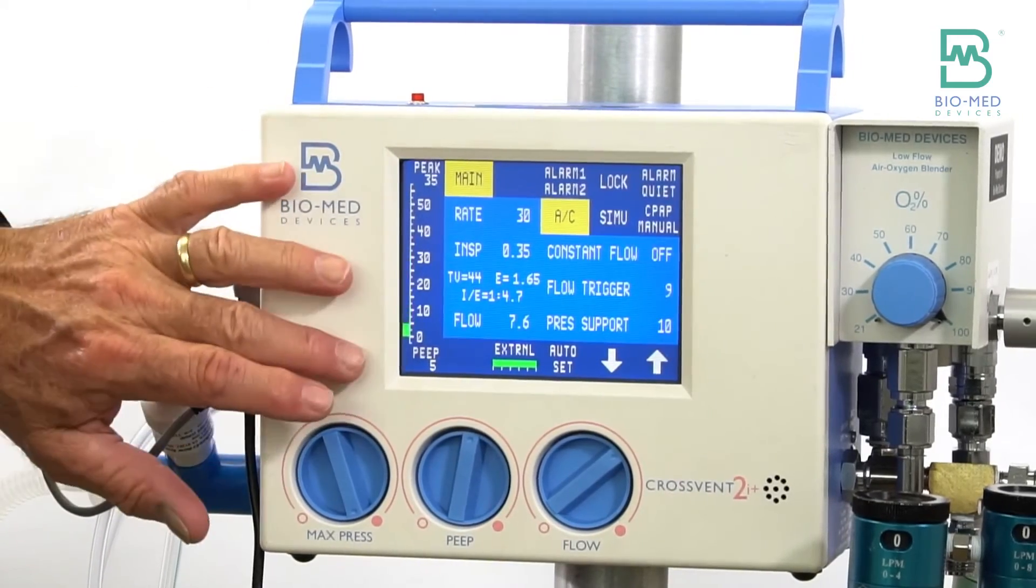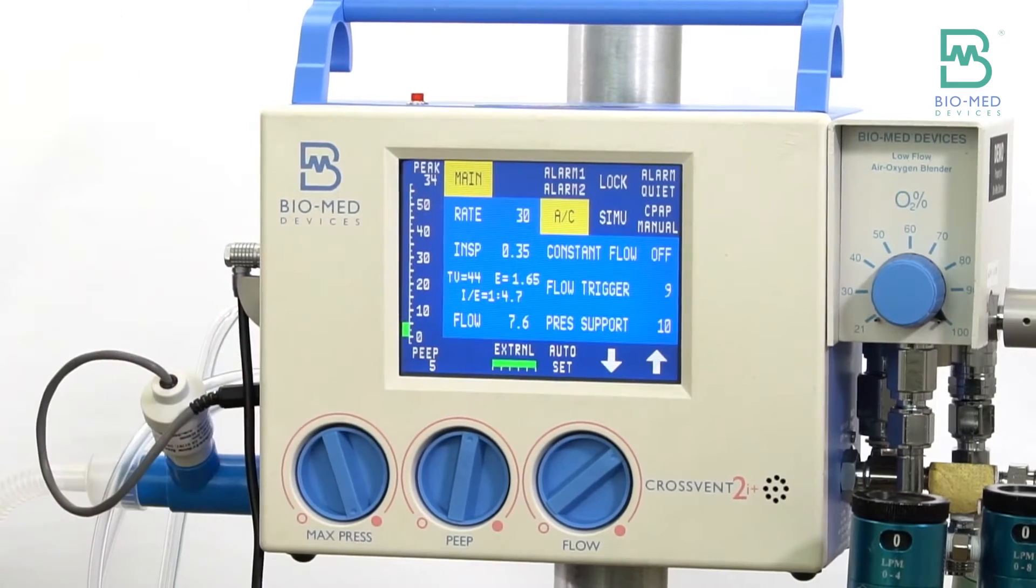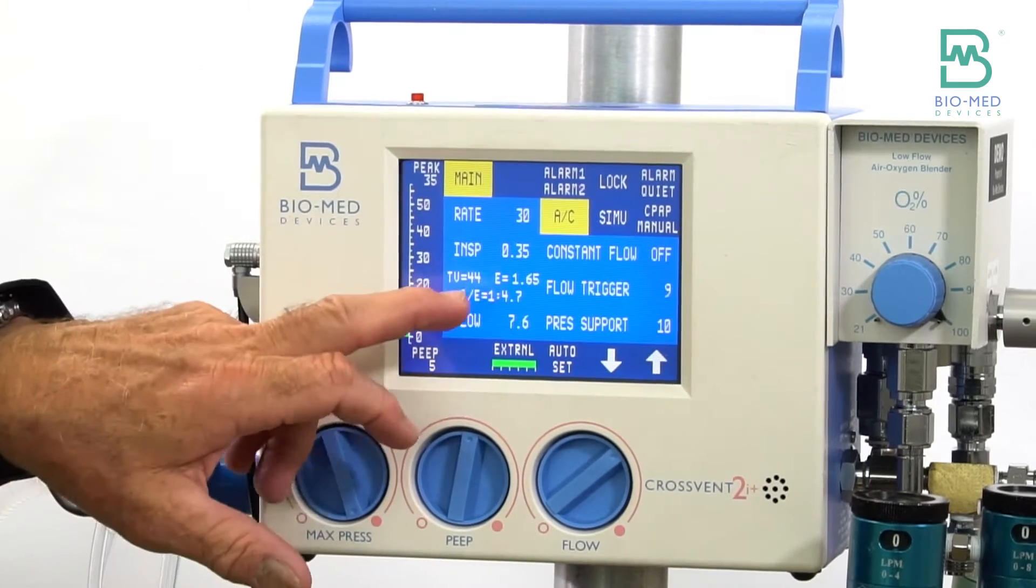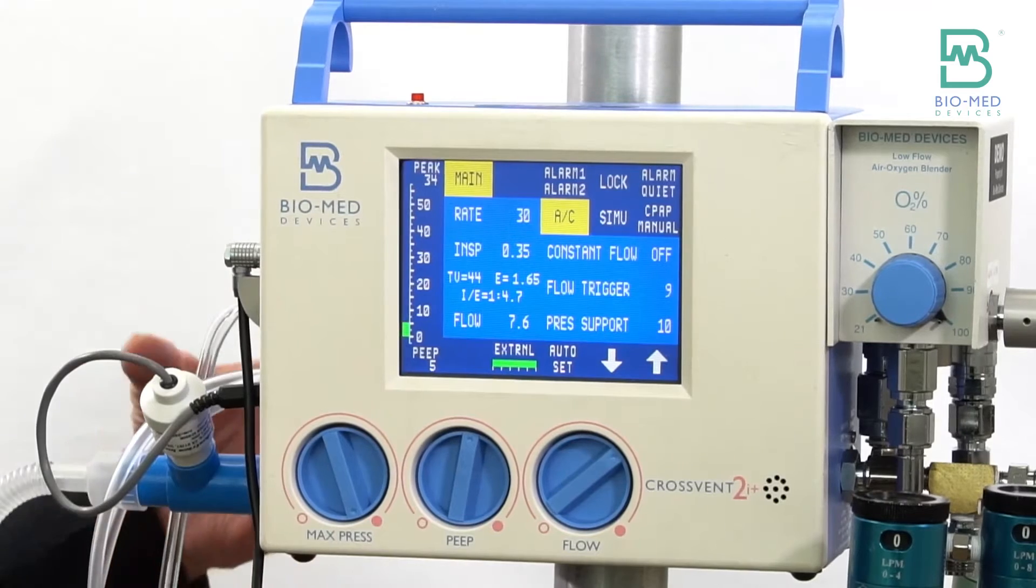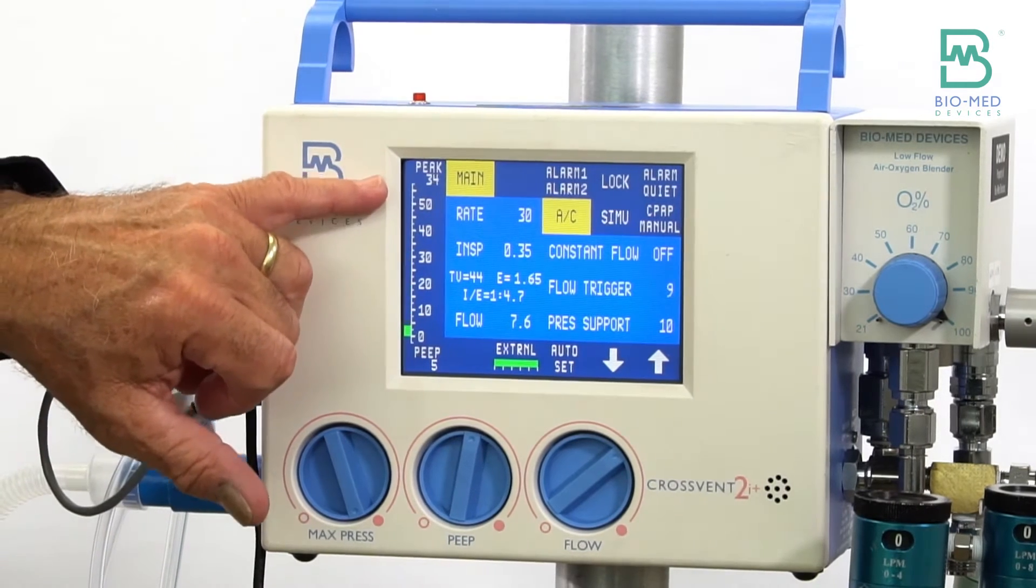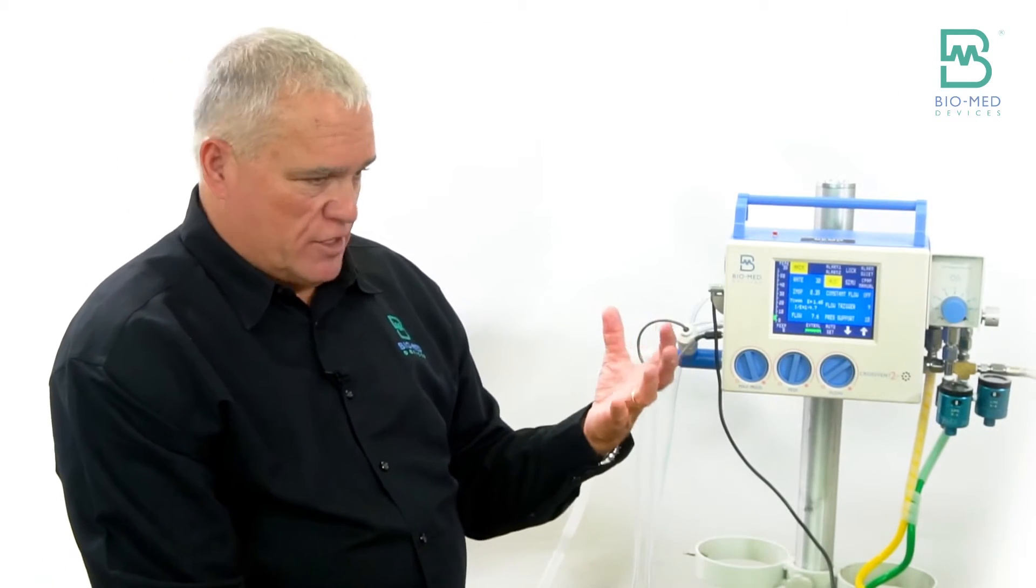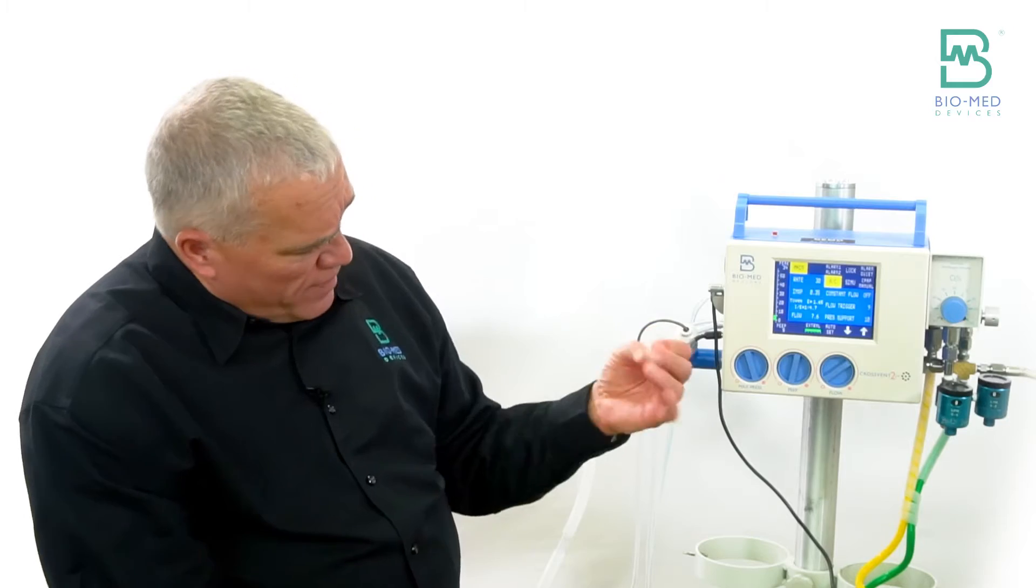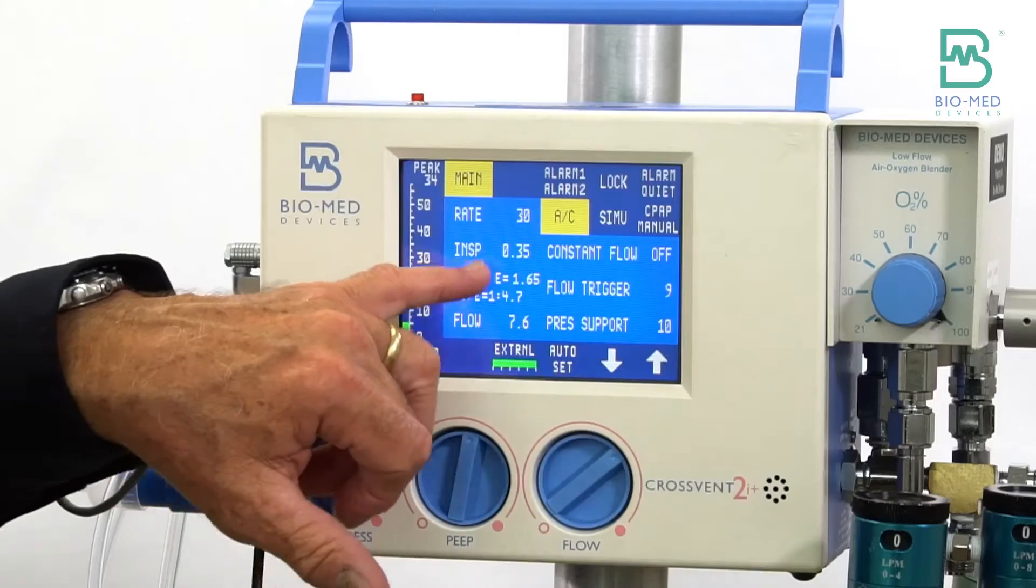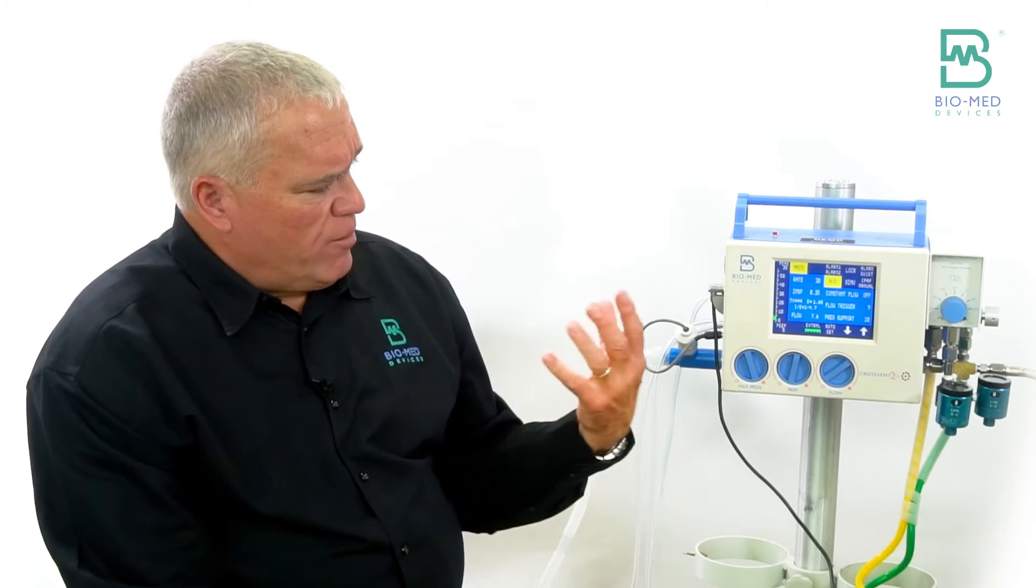So in this case it's taking me 35 centimeters of water above your PEEP to deliver that 44 through the circuit. Now again, to do the math, you take 35 centimeters minus your PEEP, so that's 30 centimeters. If my compliance factor is 0.5, that means that about 15ml of that volume is going to be lost, so that would mean I would expect about 29.